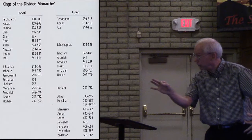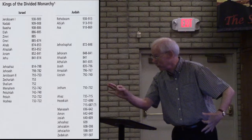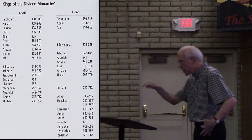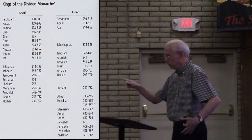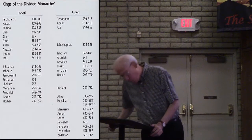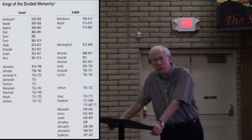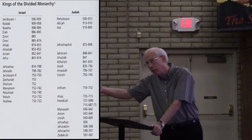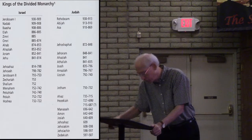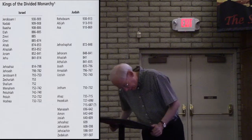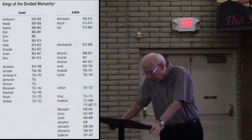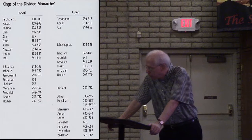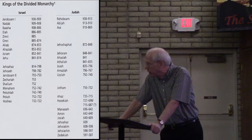You see how close the Davidic line came to being extinguished — that one baby, taken by a woman playing a pivotal role. Jehosheba secretly removed him from that group that was going to be killed, so Athaliah thought they were all dead, but they were not.